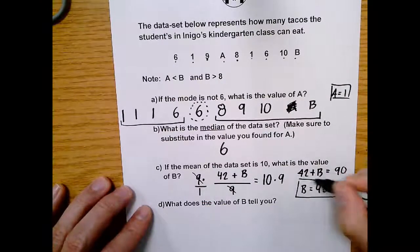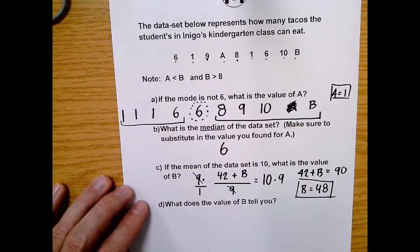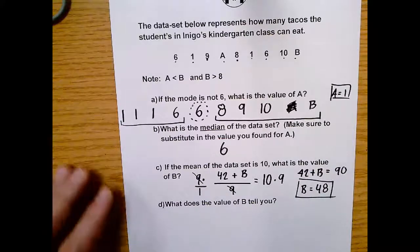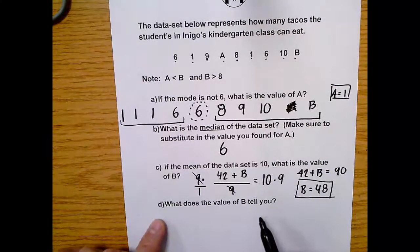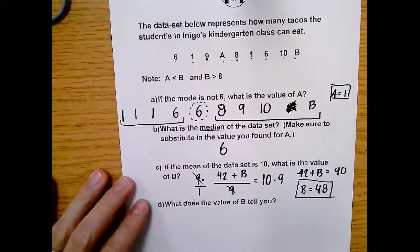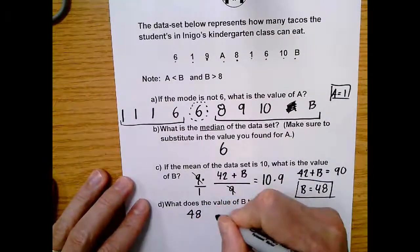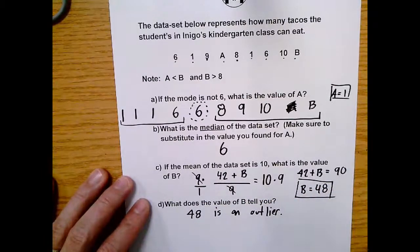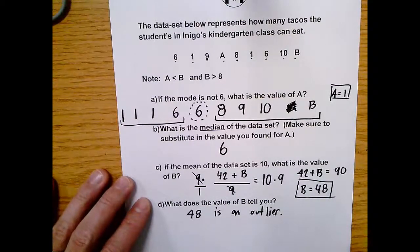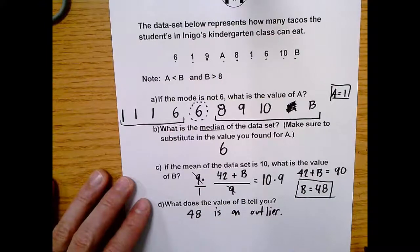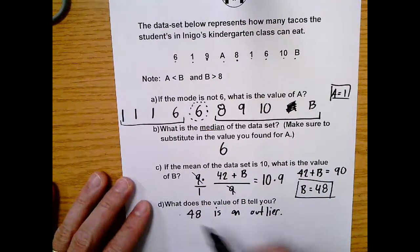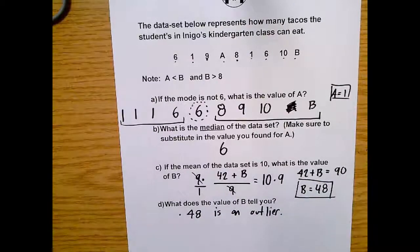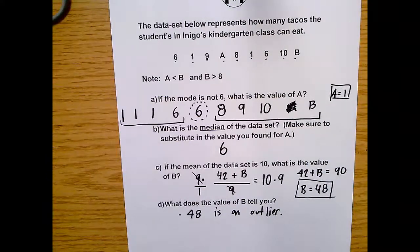And this is why it's important to keep your question in context. Because there is a little kid in kindergarten class who can eat 48 tacos. That's amazing. So what does the value of B tell you? Okay. In the context of the data set in mathematics, that tells us that 48 is an outlier. Or B was an outlier. It also tells you that there is potentially a very large child in a kindergarten class who can eat 48 tacos. So what else does that tell you? It tells you to go buy more tacos or maybe take a kid to the doctor. Okay. Either way, that is how you use mean, medium, mode to solve for variables.